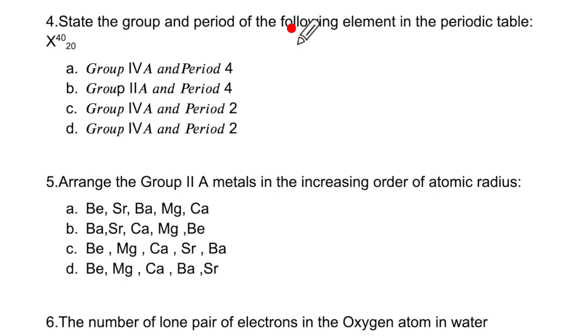The fourth one, state the group and period of the following element in the periodic table where X is 40, 20. The atomic number is 20 which means it is going to have configuration 2, 8, 8, 2. How many shells do you see? 4. So it is period 4. But how many valence electrons are there? 2 valence electrons. So group not 4A but 2A, and this is the correct option.